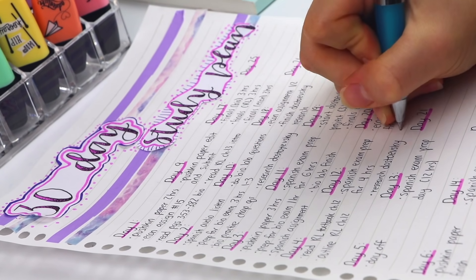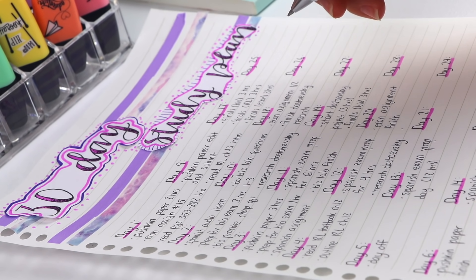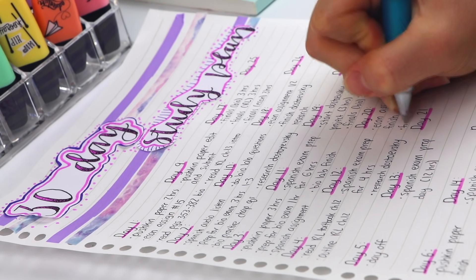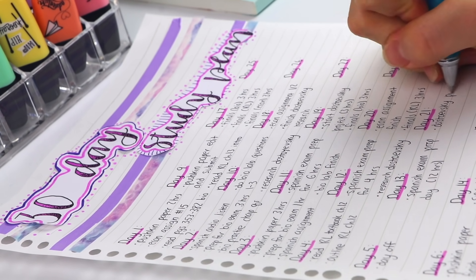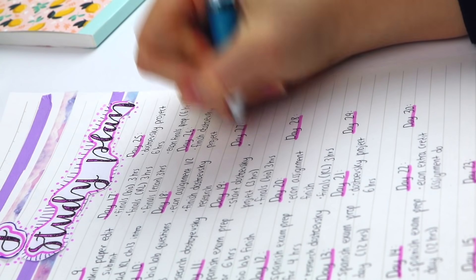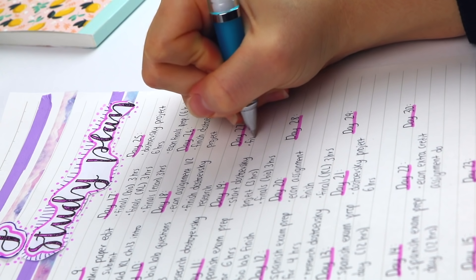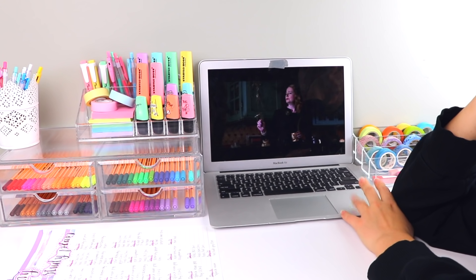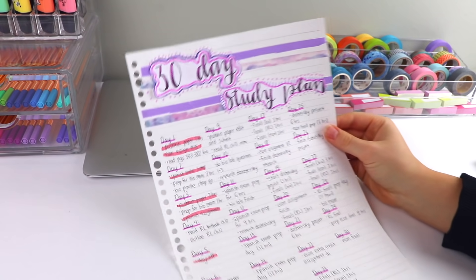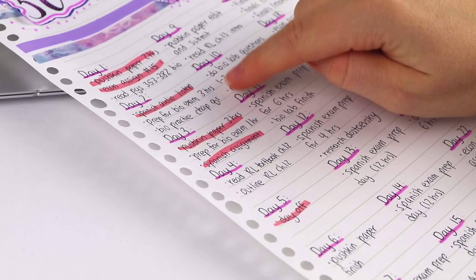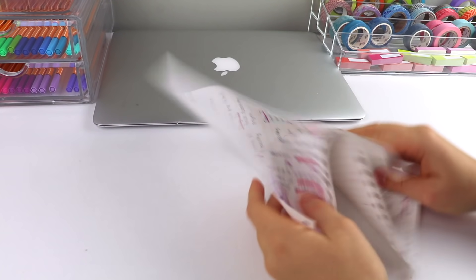As we write down our plans and all the things we want to get done, we get more and more excited about how we're finally going to not procrastinate this time and get our life together. Everything's going to be different from last year. We get all pumped up and motivated, finish our plan, put it on our desk, and then the following morning we're supposed to wake up and perfectly follow the schedule or plan and get everything done.